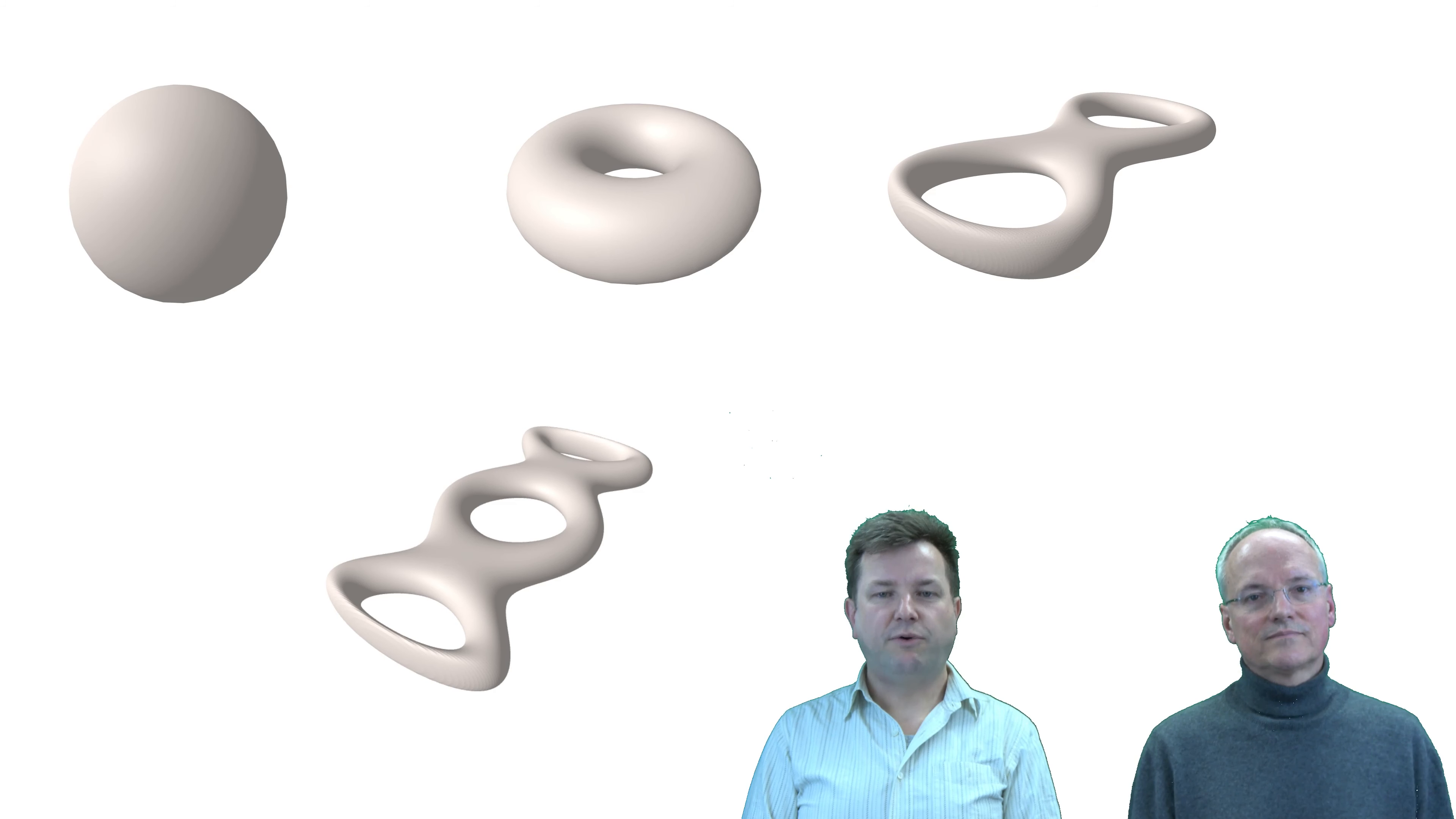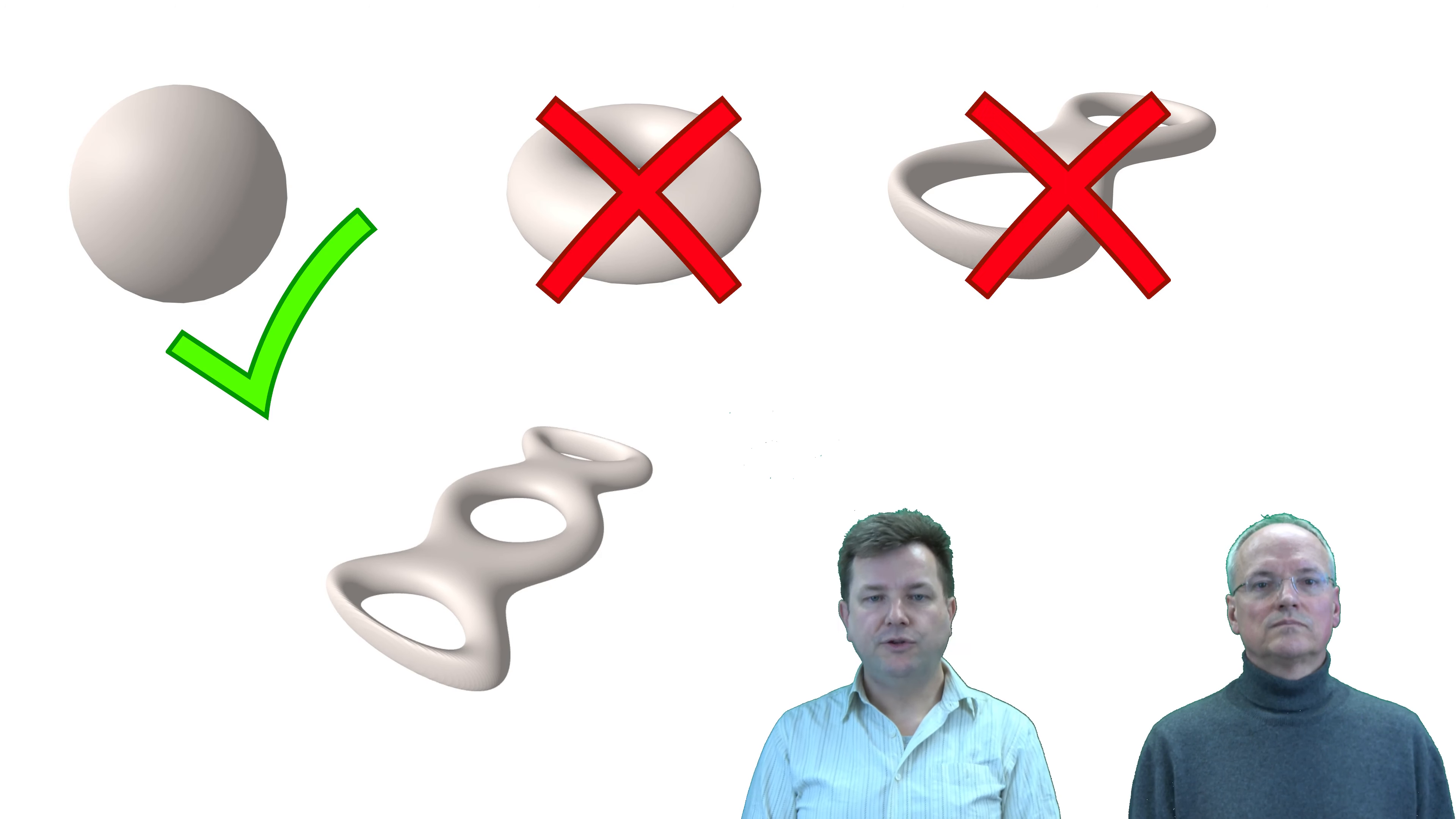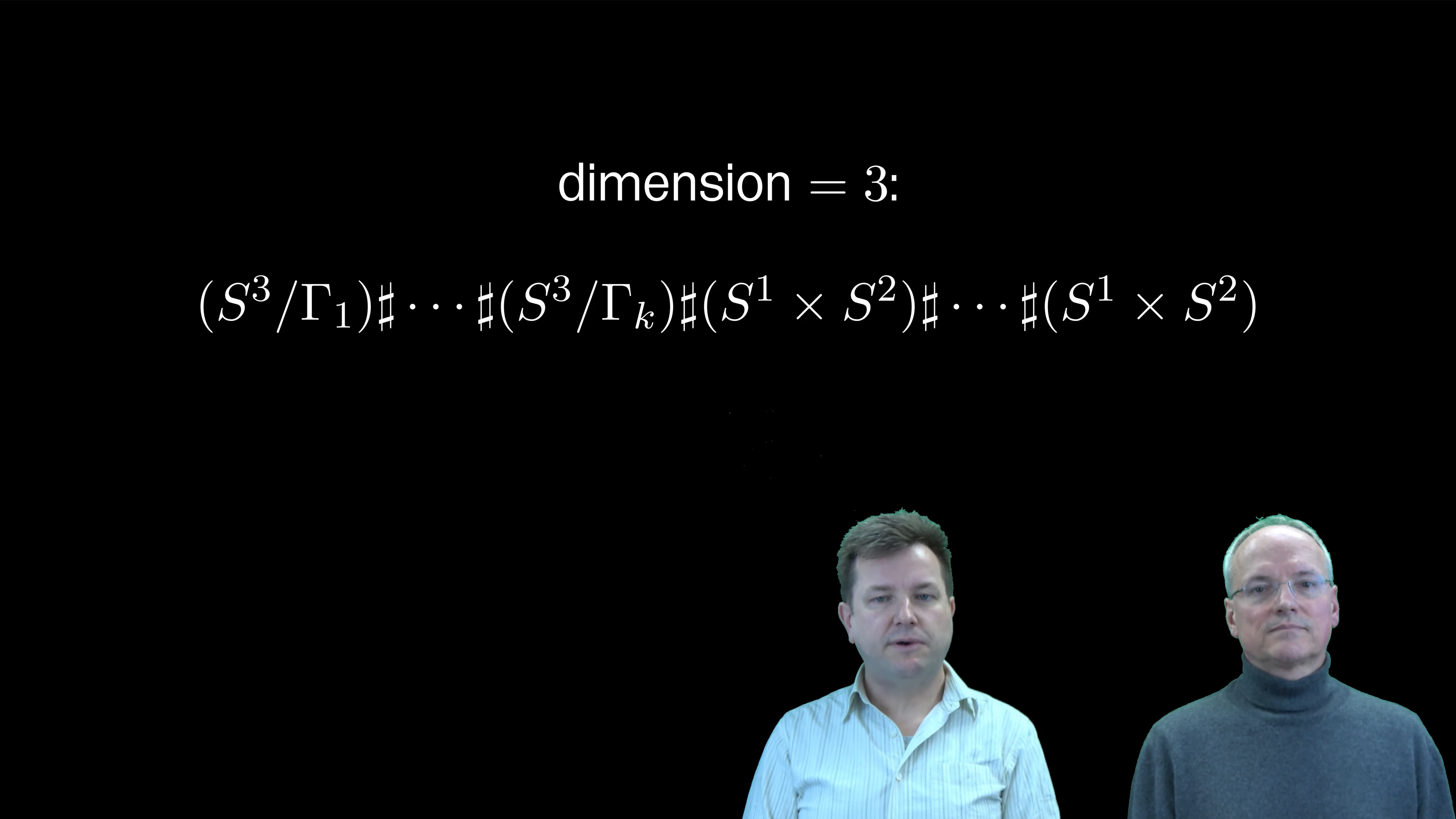The existence of metrics of positive scalar curvature, or PSC metrics for short, on closed manifolds is a well-studied problem. We have a complete understanding in dimension 2, due to the Gauss-Bonnet theorem, and in dimension 3, due to results by Gromov and Lawson combined with Perelman's resolution of the geometrization conjecture.